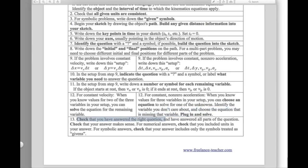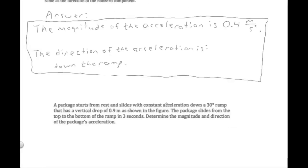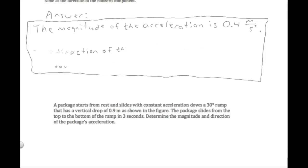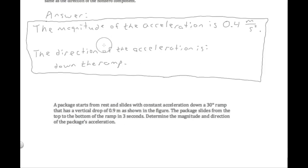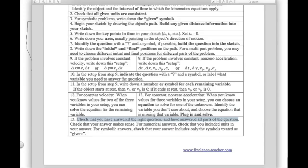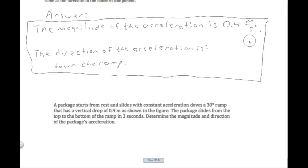We should do some checks. Make sure you've answered the right question and all parts of it. The question asked for magnitude and direction of the package's acceleration. Many students would just say 0.4 m/s² and forget the direction. Make sure to answer all parts. Also confirm units are included — without units, the physics answer would be wrong.